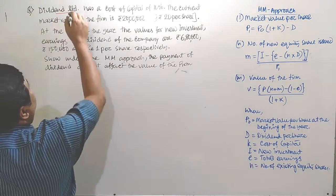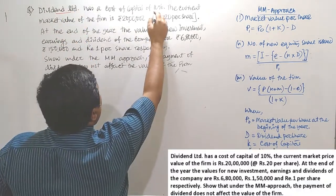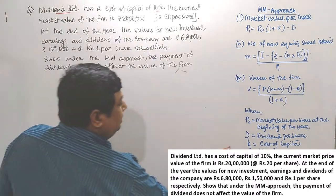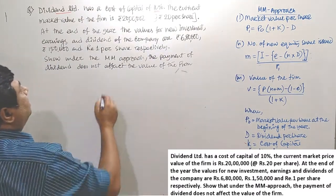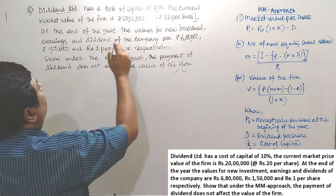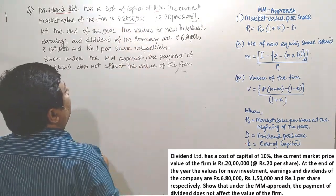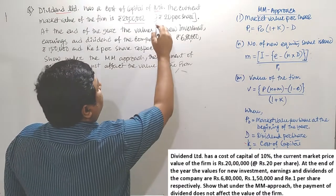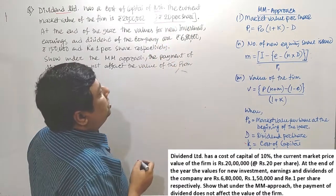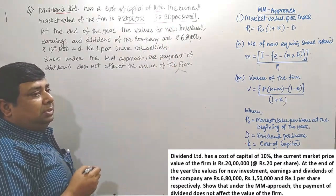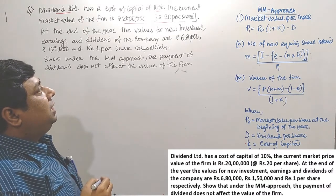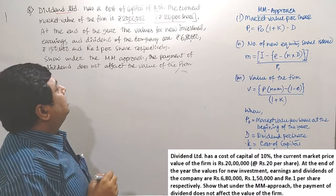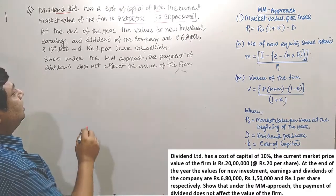Dividend Limited has a cost of capital of 10% — that means K, or cost of capital, is 10%. The current total market value of the firm is Rs. 20 lakhs, at Rs. 20 per share. The calculation gives us Rs. 20 lakhs divided by 20, which equals 1 lakh shares.